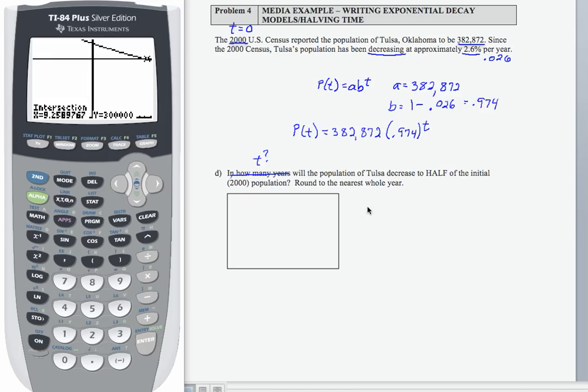Well, the initial population was 382,872, so if I want half of that, I'm going to divide that by 2, and I'm going to get 191,436. So in how many years will the population of Tulsa equal 191,436?